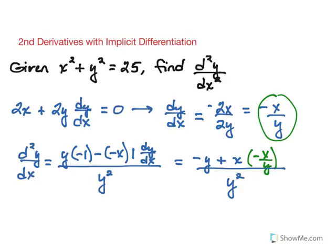If we continue simplifying from here, we would have negative y minus x squared over y, all over y squared.